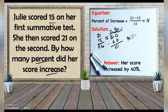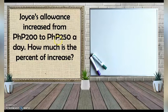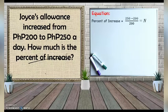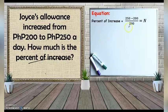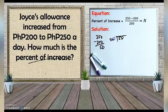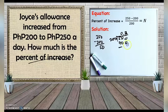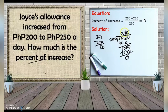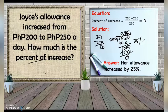Another example: Joyce's allowance increased from 200 to 250 pesos a day. How much is the percent of increase? Using the formula: amount of increase is 250 minus 200 divided by 200. That is 50 divided by 200. Adding a decimal: 500 divided by 200 is 2, then 1000 divided by 200 is 5, no remainder. The answer is 0.25. Moving two places to the right gives 25%. Joyce's allowance increased by 25%.